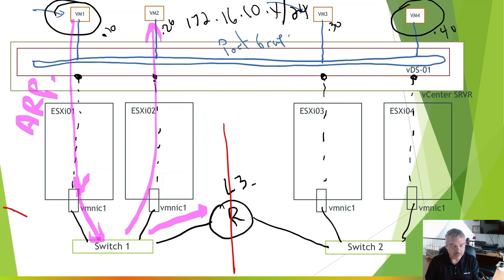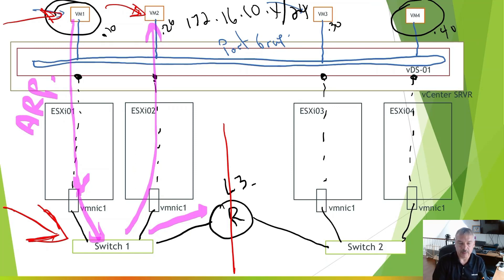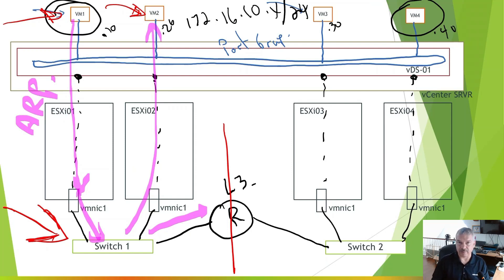In a typical vSphere environment, whether you've got a standard switch or a distributed switch, physically down at the bottom, the hosts have to be connected on the same layer 2 network — natively. Now, if VM1 wanted to talk to VM2, notice they're in the same broadcast domain — the ARP would travel to VM2 fine. We just cannot go through that router. Some of you might ask why not send it to its default gateway — but these VMs are all in the same 172.16.10 network. The IP stack says 'we're on the same subnet, I don't need to send it to the router.' So VM1 won't fire it off to the router.